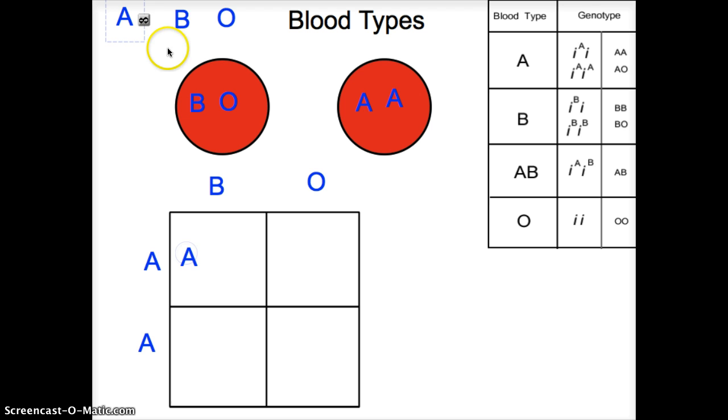So at least 25% here would be AB. And down here, another 25% of their kids would be AB, even though neither of them have AB. And then 25% here would be AO, and another 25% would be AO.